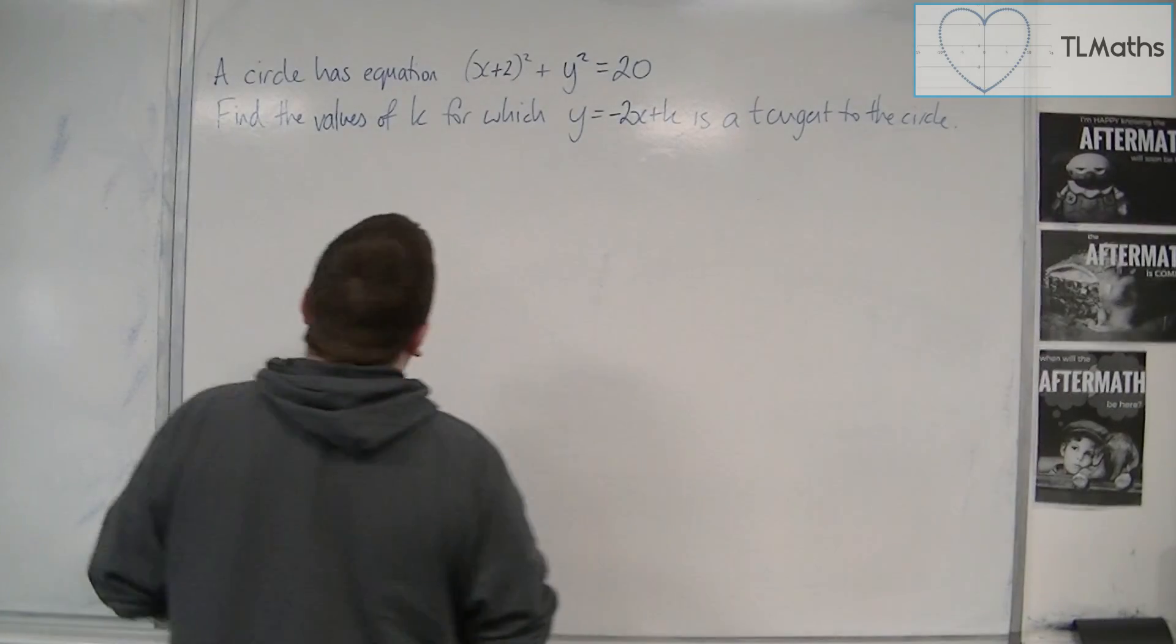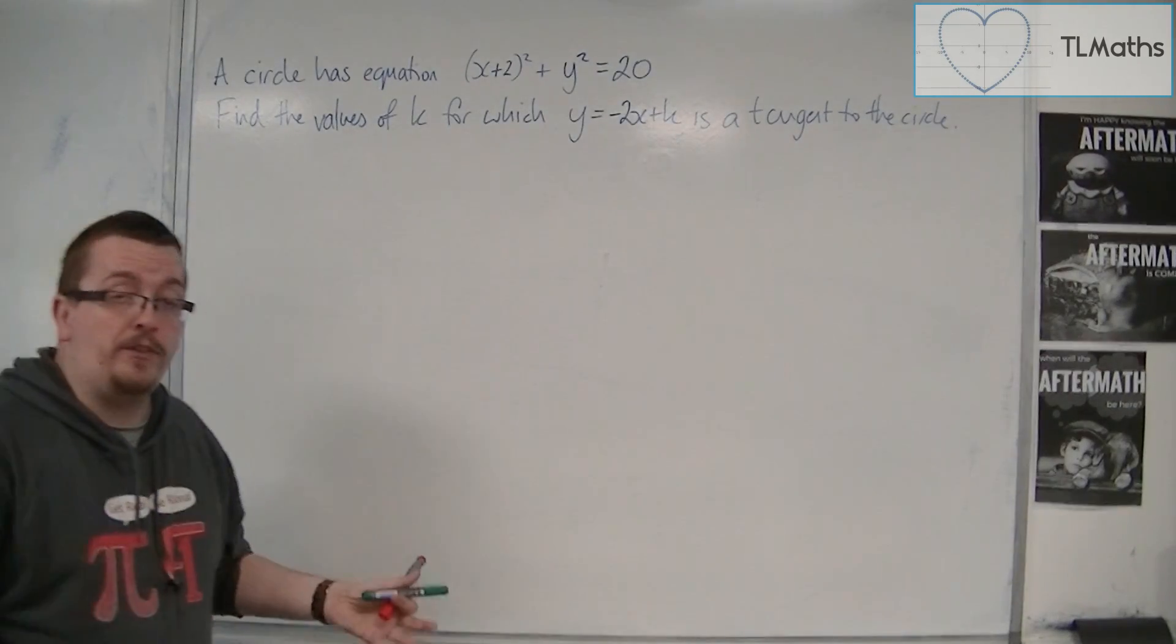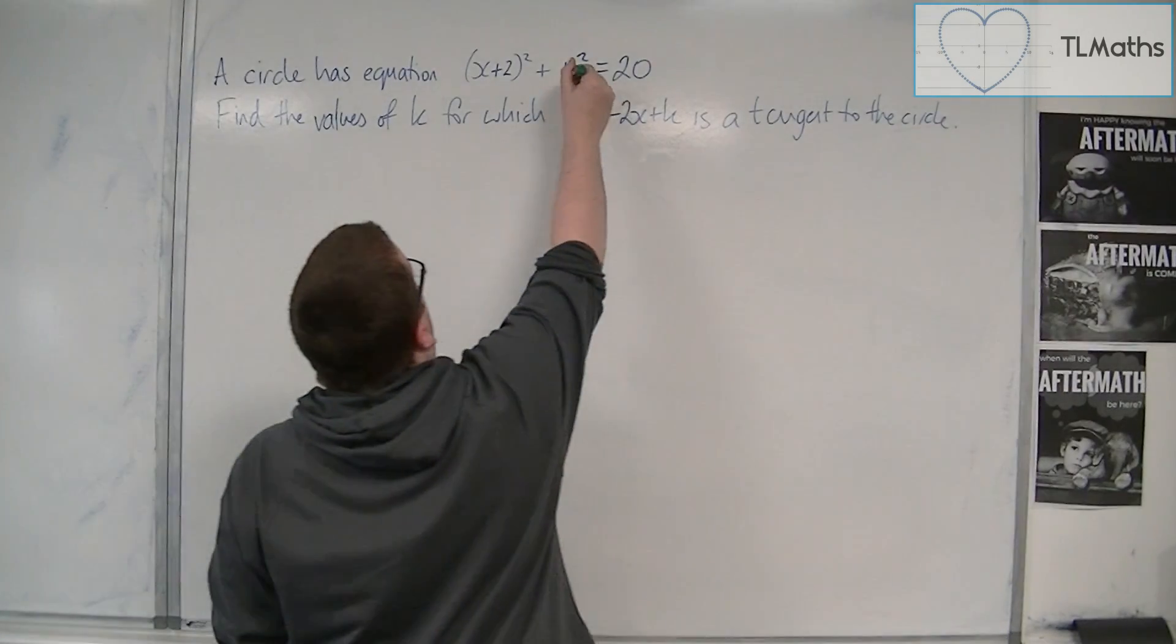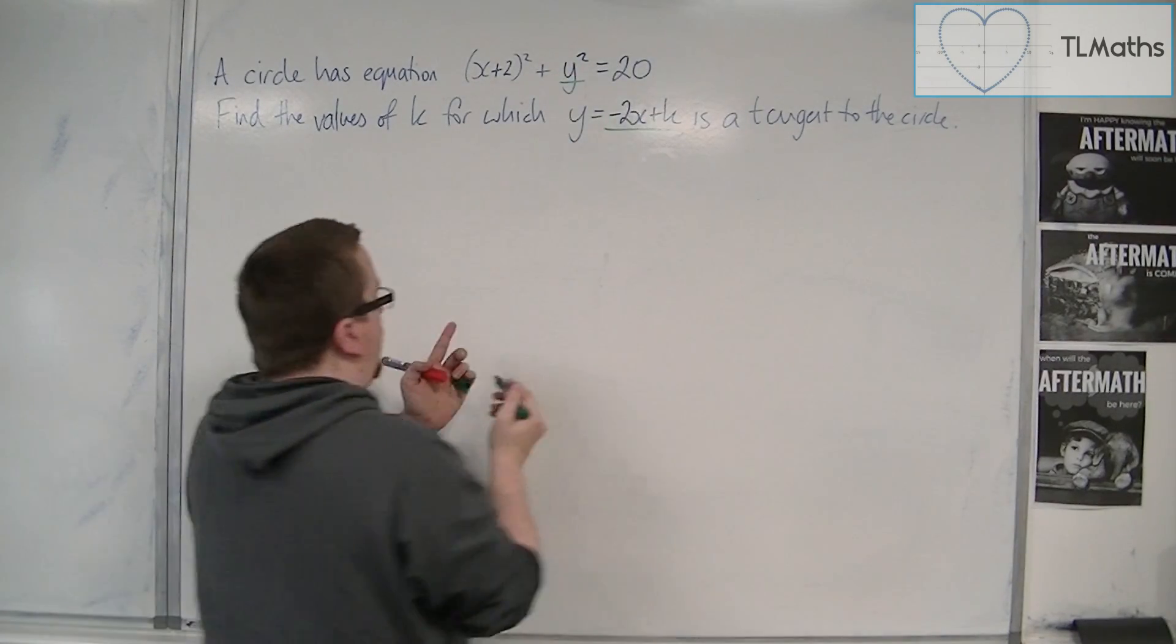So because we're looking at a tangent, the tangent intersects the circle, so we're going to be using simultaneous equations. And we're going to replace this y with -2x + k.